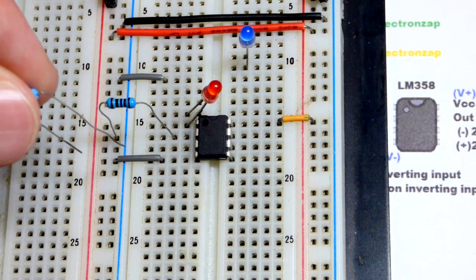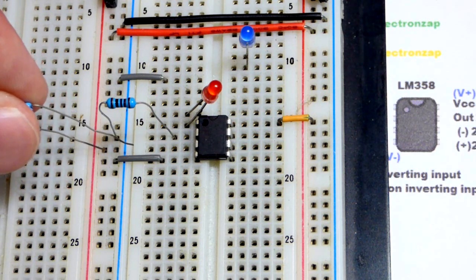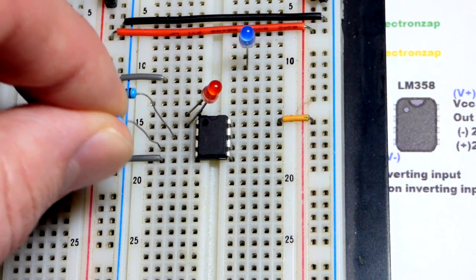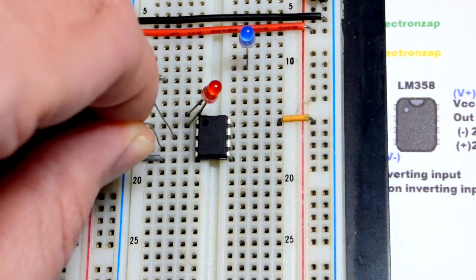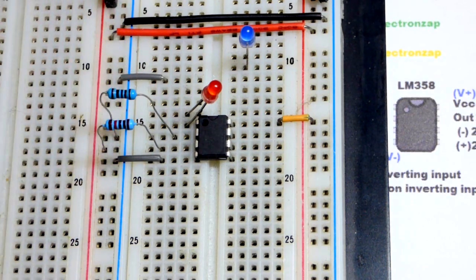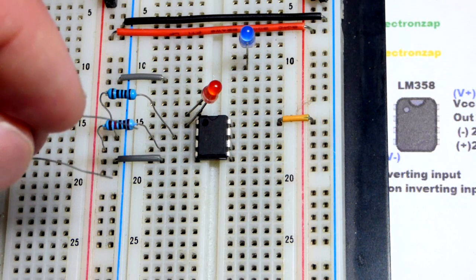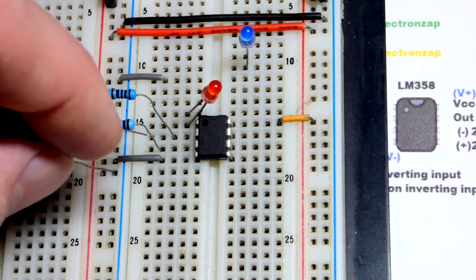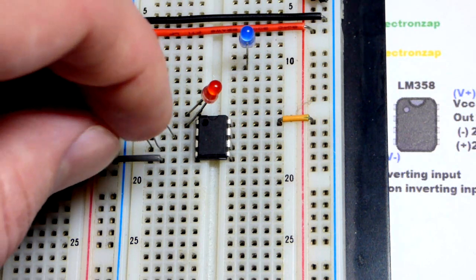Now we will set our voltage divider. So this one's going to the positive side of the power supply and then to the non-inverting input. Remember, this is the voltage we're setting that will set the voltage at the output thanks to negative feedback right there.